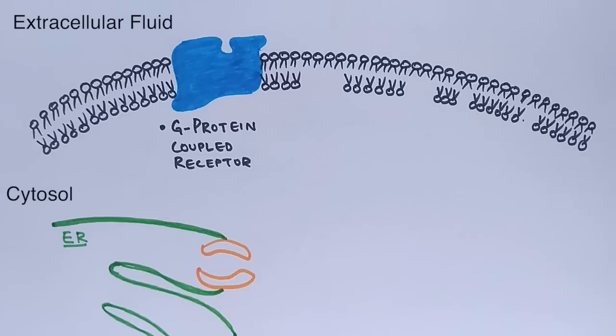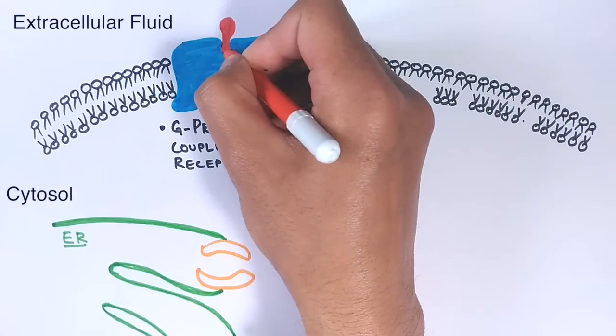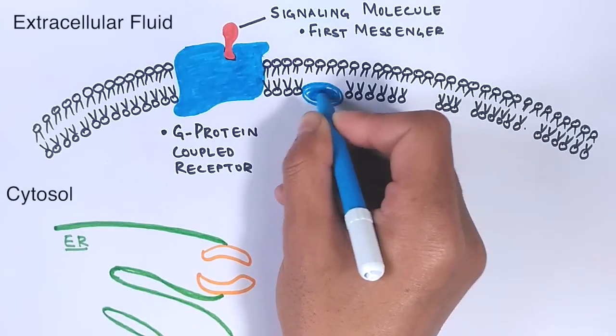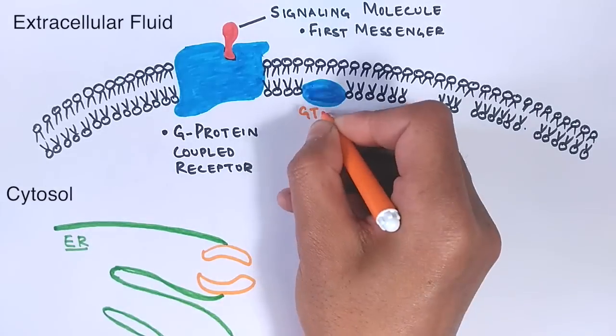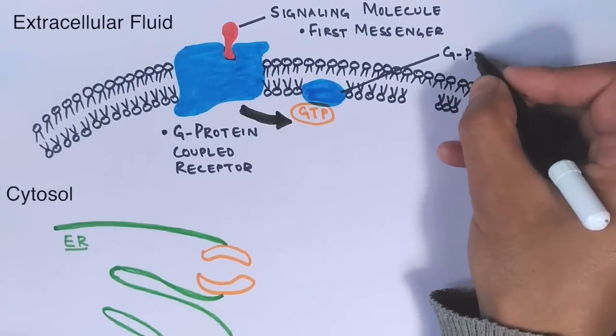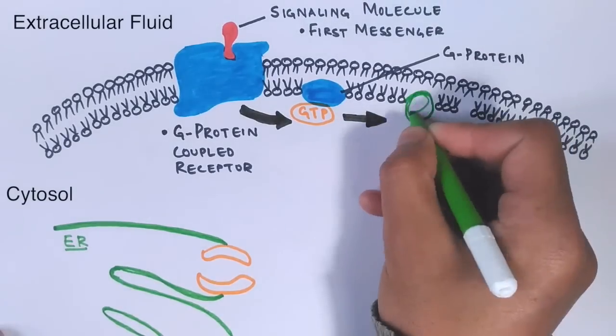Here in this pathway, the G protein coupled receptor receives a signaling molecule, that's first messenger, and initiates the process of activating the other components in the pathway. The receptors stimulate GTP binding. When GTP binds to a G protein, it turns it on, and when GTP is hydrolyzed to GDP, it's then off. So after turning it on, it activates protein called phospholipase C.